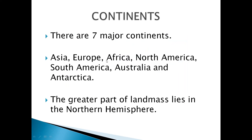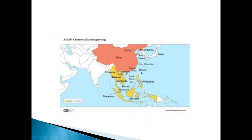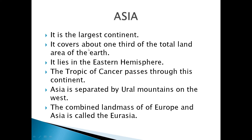There are seven major continents: Asia, Europe, Africa, North America, South America, Australia, and Antarctica. The greater part of landmass lies in the northern hemisphere. Asia is the largest continent — it covers one third of the total land area of the earth. It lies completely in the eastern hemisphere. The Tropic of Cancer, Arctic Circle, and the equator also pass through this continent.